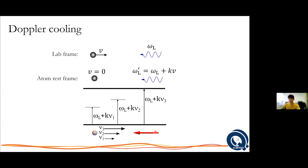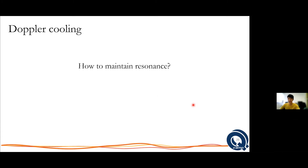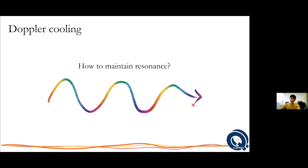You cannot work out of resonance. The next question is: how can you maintain resonance? A very straightforward approach would be to change the frequency as you are shining — change the colors of the laser. This is known as chirp cooling, and feels like a brute force approach. Technically not so easy, but it's been done.